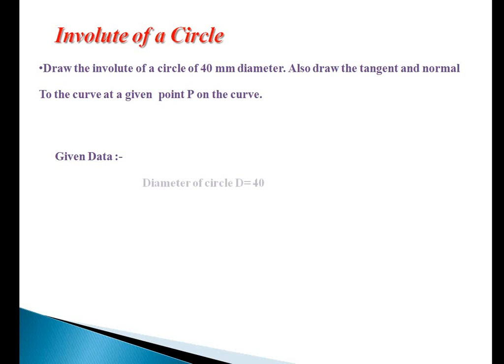First we see the given data. The given diameter of circle is equal to 40 mm and the radius is equal to 40 by 2, which is 20 mm.